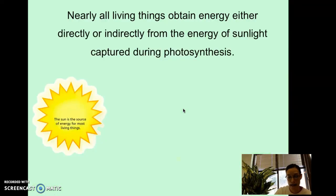This part is not on your note page, but you do need to know this, and this is very important. Nearly all living things obtain energy either directly or indirectly from the energy of sunlight captured during photosynthesis. And we're going to start with this little picture here. The sun is the source of energy for most living things. This is a really common EOG question. What is the original source of energy for all living things? And the answer is sun.